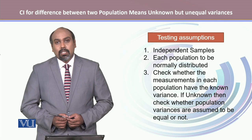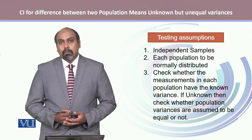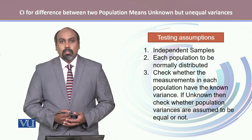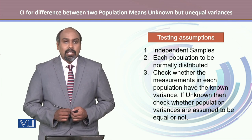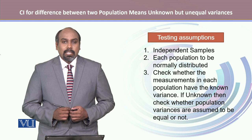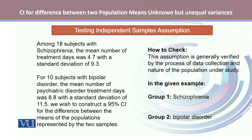Here we are testing three assumptions: whether the samples come from populations that follow the normal distribution, whether the two samples are independent, and whether their unknown variances are equal or not. For the first assumption of independent samples, it is clear that we have two distinct groups — group one with 18 subjects with schizophrenia and group two with 10 subjects with bipolar disorder — so these two groups are entirely distinct from each other. Hence, the assumption of independent samples is verified.